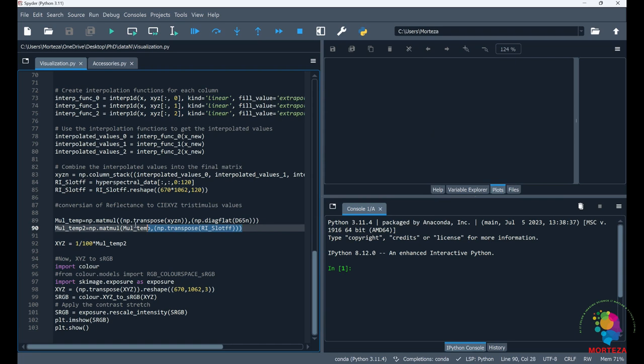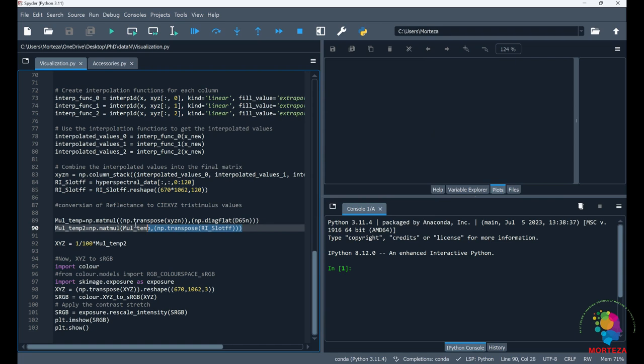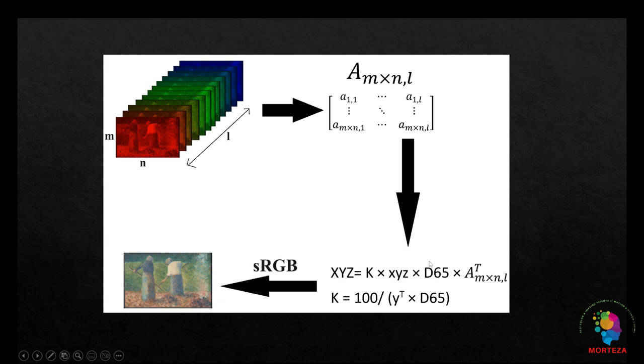And then here, I have to apply the formula that converts the reflectance into CIE XYZ tristimulus values. As shown here, I first multiply the color matching functions by the standard illuminant, and then I multiply the result of that by the reflectance values of the hyperspectral data.